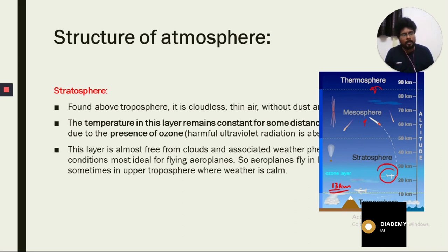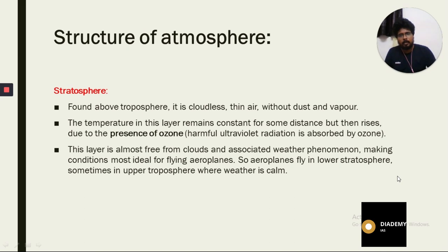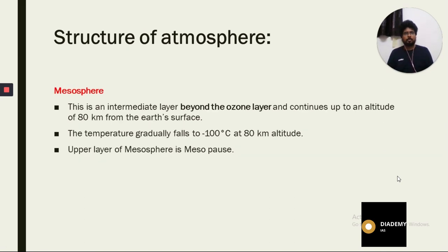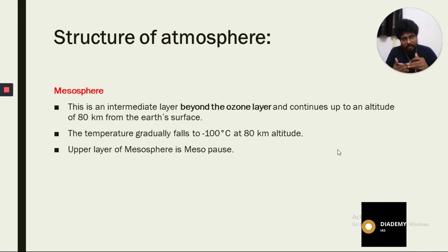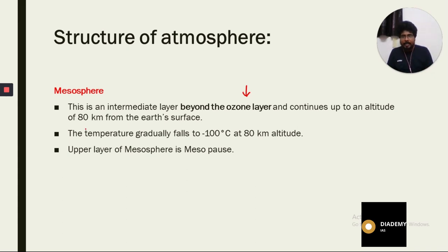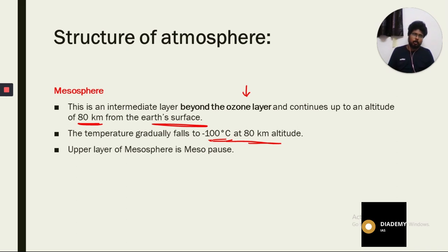Next is the mesosphere. The mesosphere is an intermediate layer extending beyond the ozone layer, continuing up to an altitude of 80 kilometers from the Earth's surface. The temperature gradually falls to minus 100 degrees Celsius at 80 kilometers altitude.